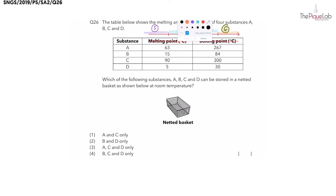The question is asking for which substance can be stored in a netted basket at room temperature. Can we store a liquid inside a netted basket? No — it will just flow through the gaps. For the same reason, we cannot store gases inside a netted basket. Liquids and gases do not have a definite shape, which is why they can flow through the gaps.